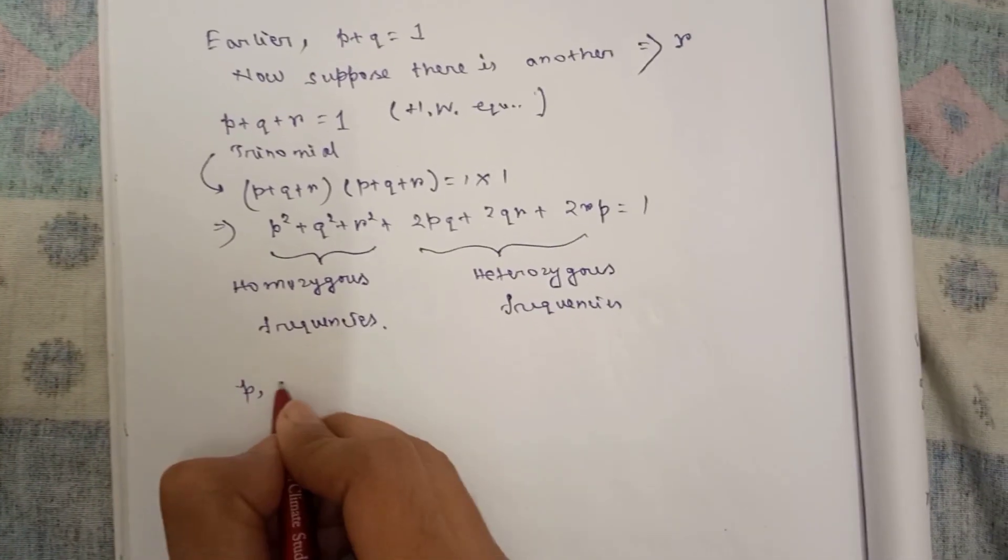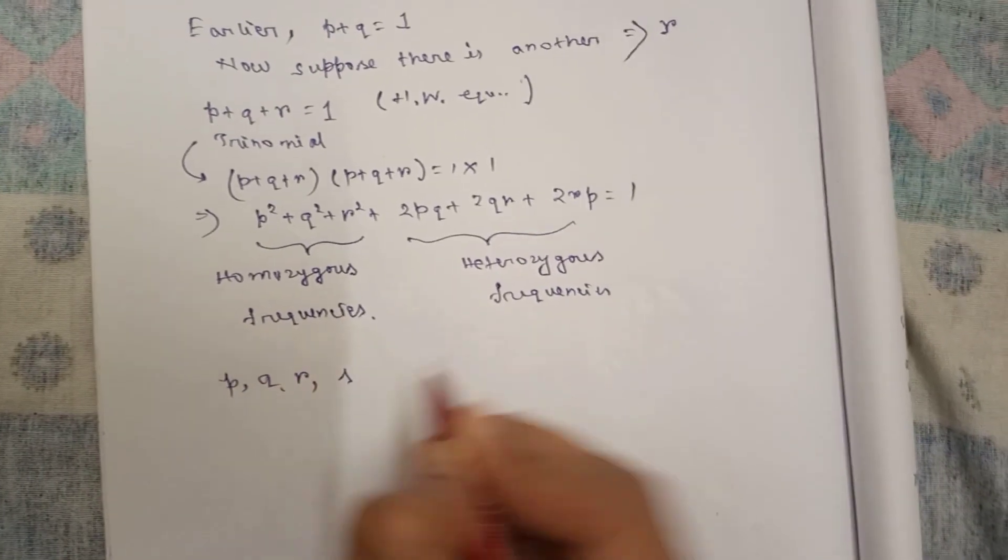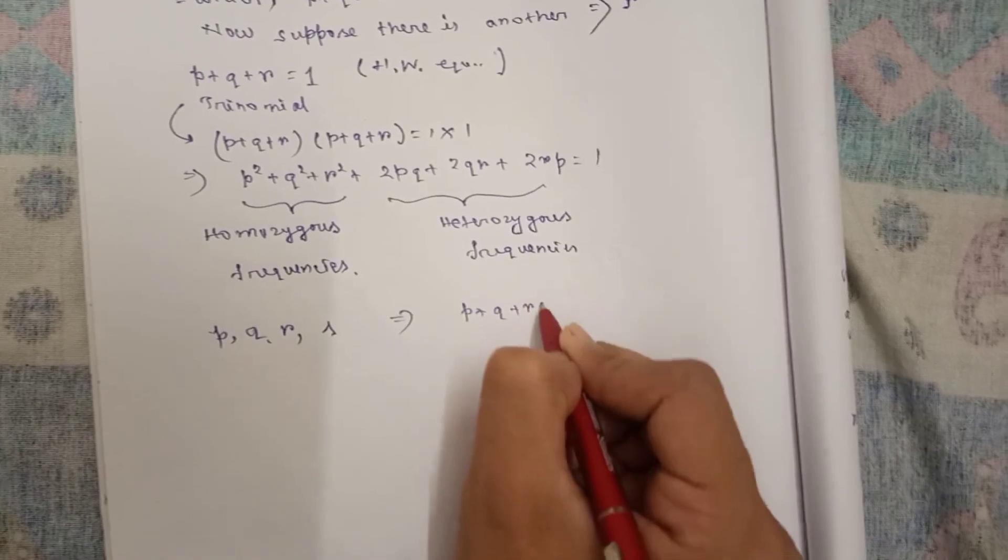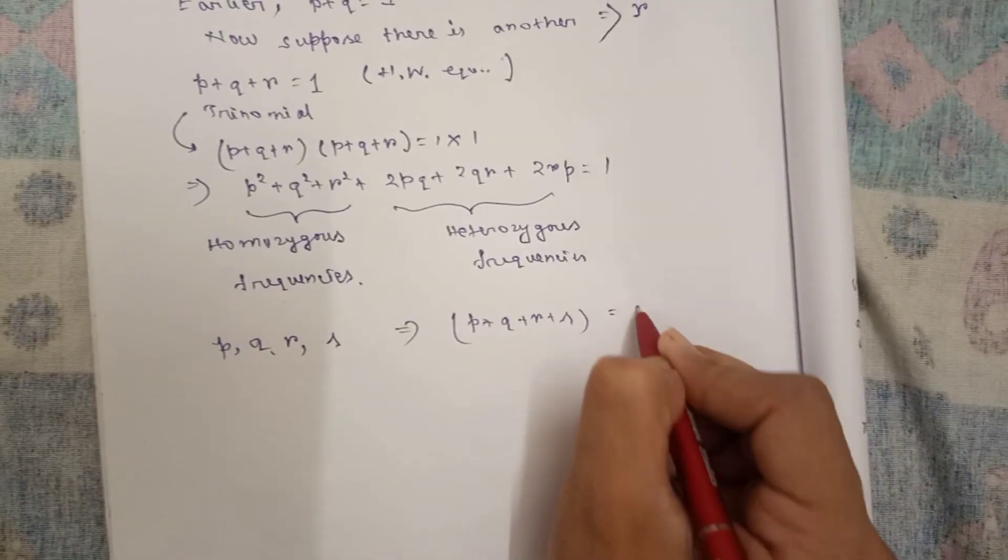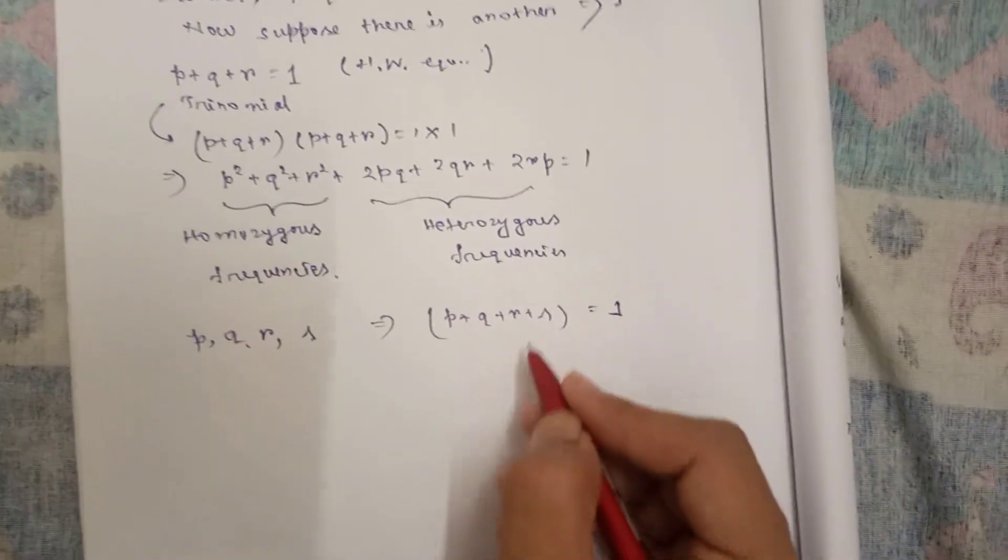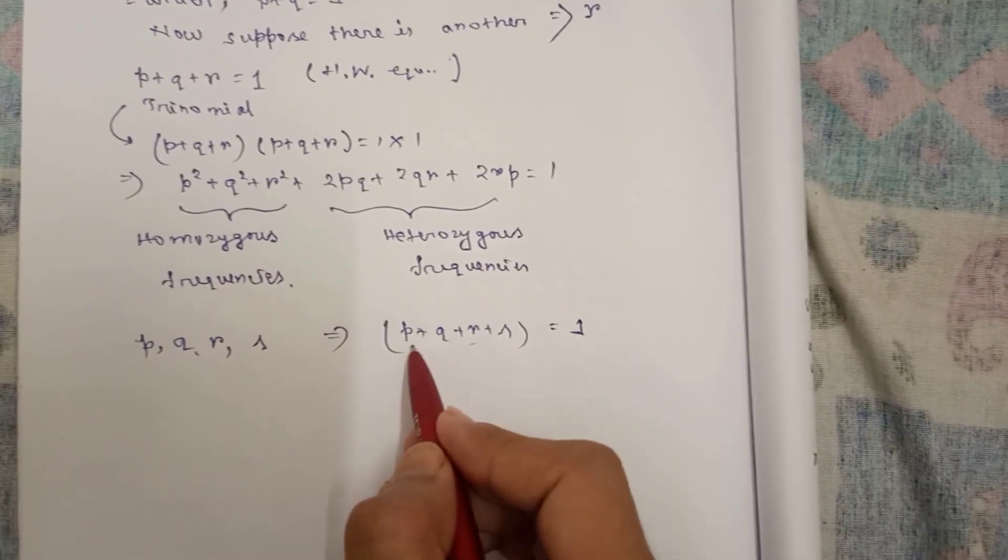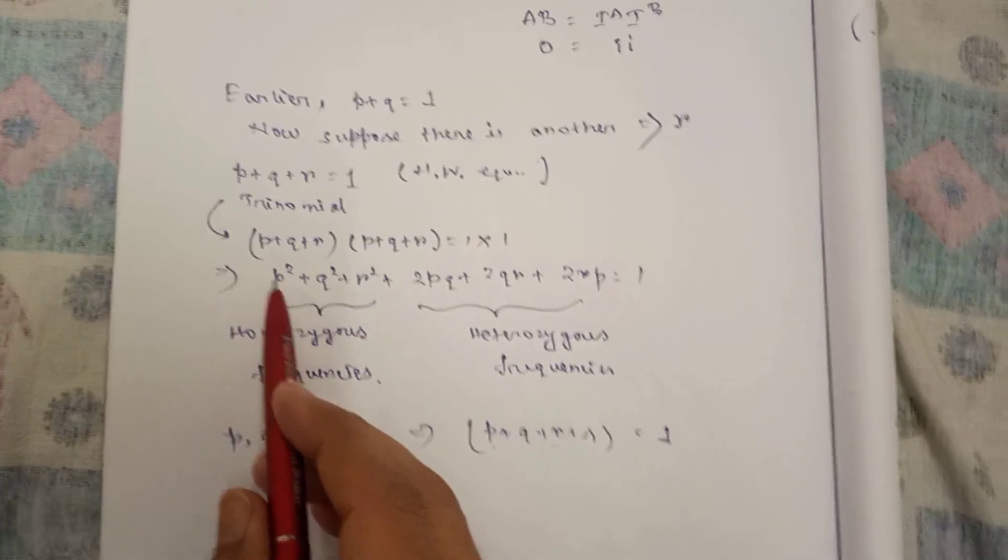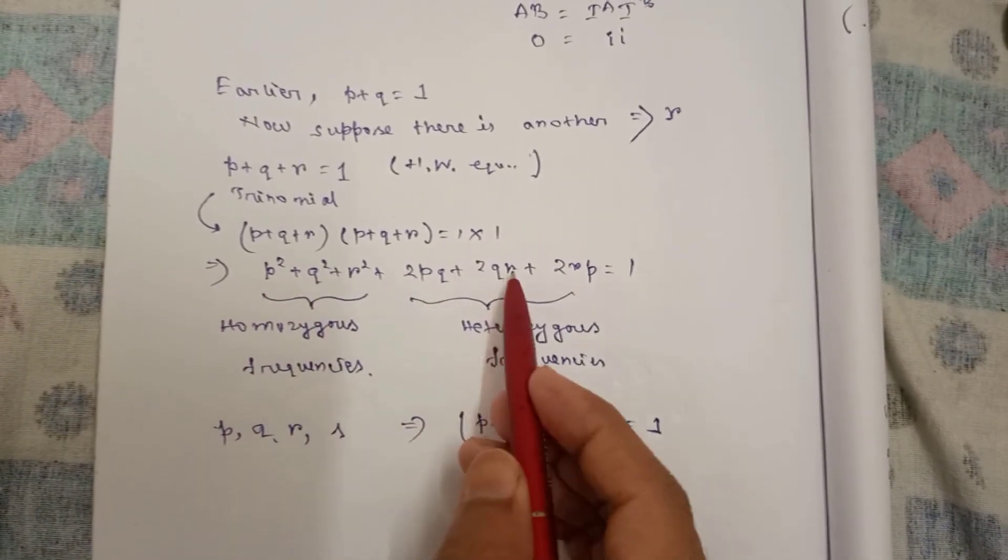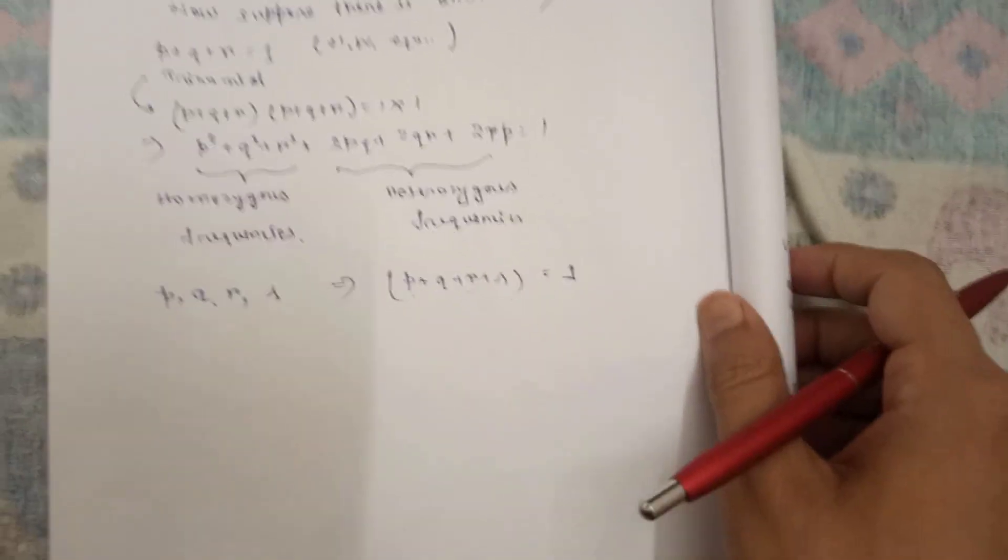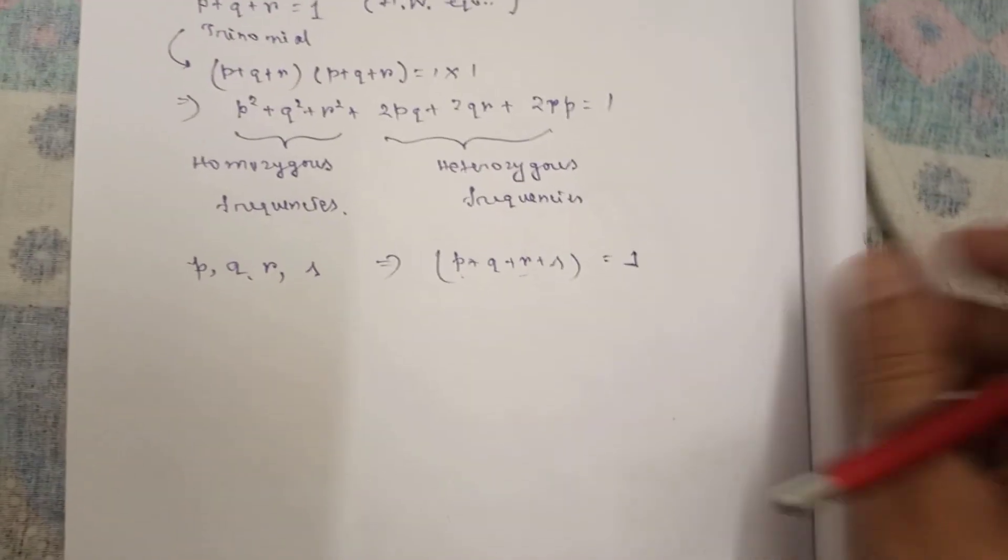If there are p, q, r, s, then it will be p plus q plus r plus s equal to one, and then you have to square it to get the genotypic frequency. p, q, r, s are the allele frequencies and genotypic frequencies are p square, q square, 2pq, 2qr, etc. Let's have one problem to solve.